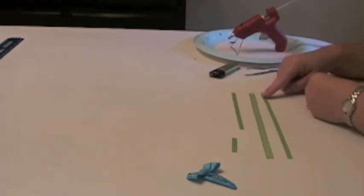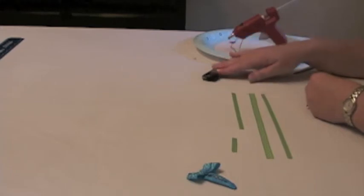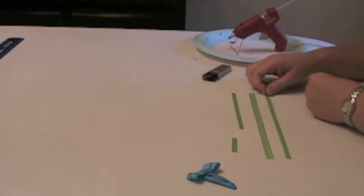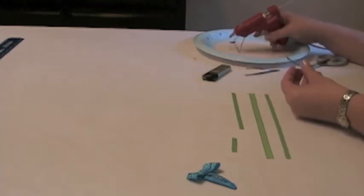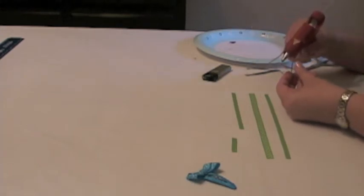You'll start by sealing the ends of your ribbon with a heat source, like a lighter, so that they don't fray. And then you'll take some hot glue up at the top to get your ribbon started.